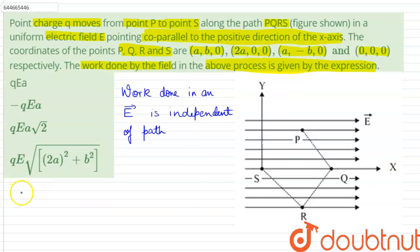Therefore, we can clearly write that work done in path PQRS is equals to the work done in taking charge from point P to point S.